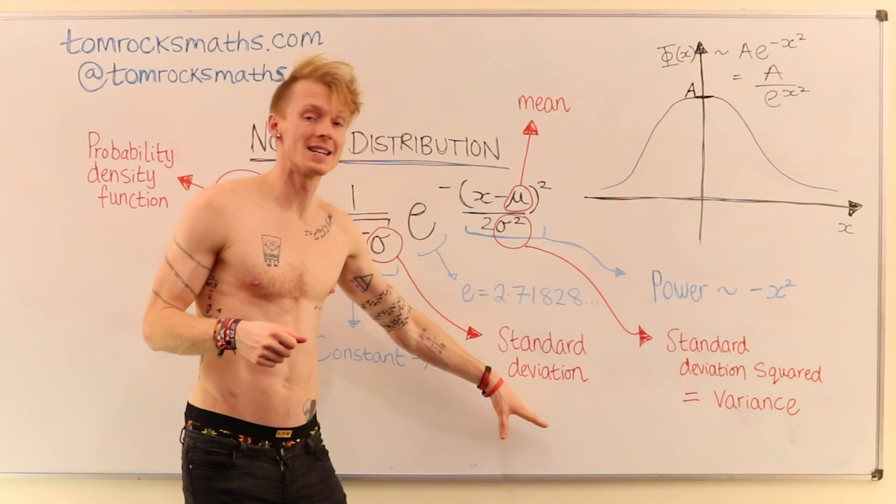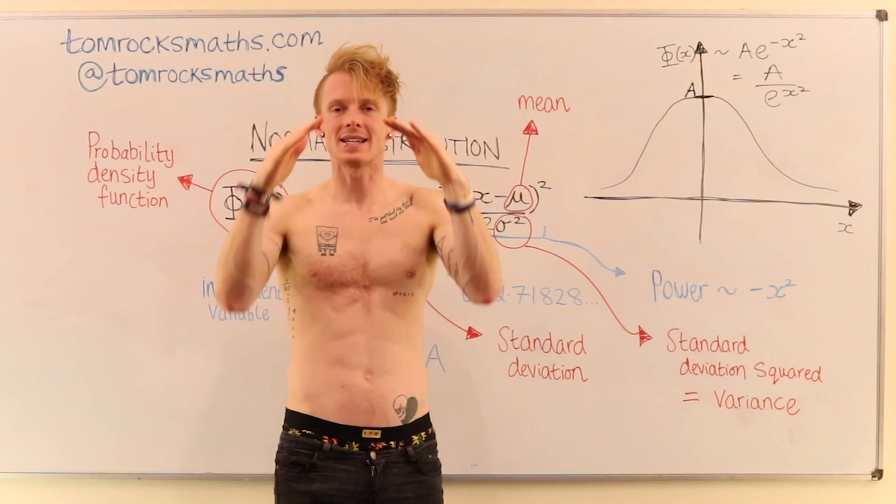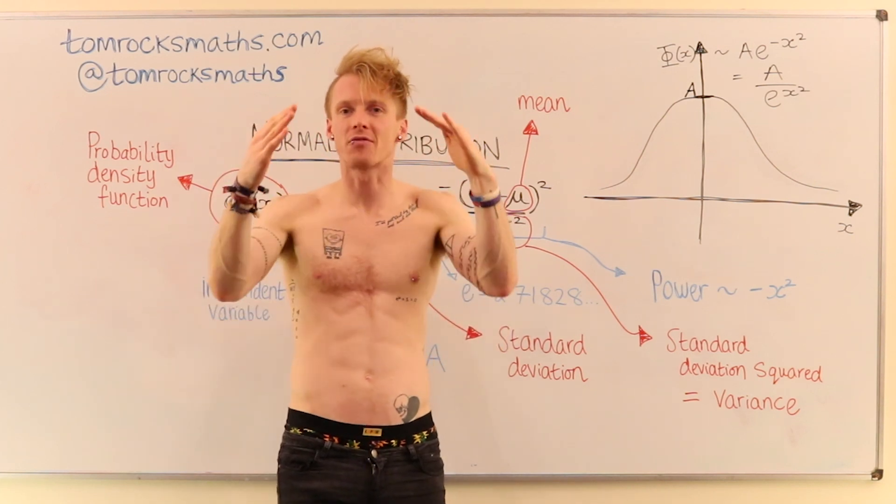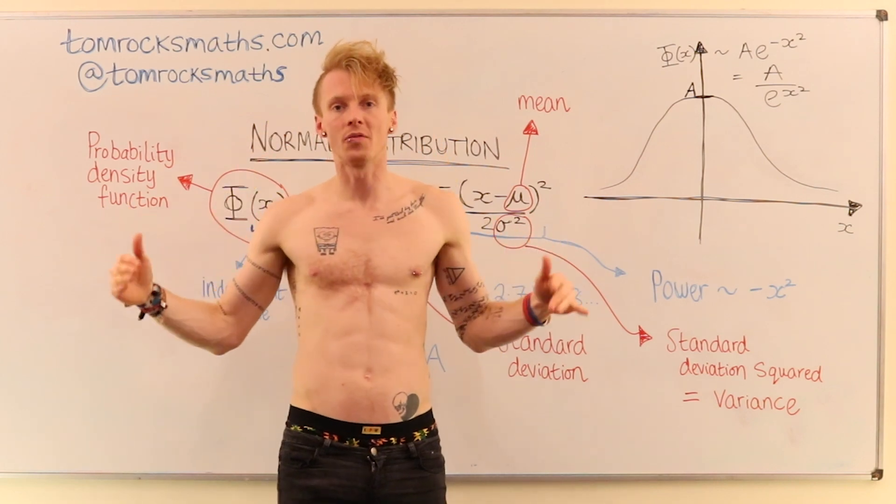Now here, sigma is the standard deviation. And this just tells you how quickly your data decreases away from that average value. So in some sense, it gives you the spread of the data.